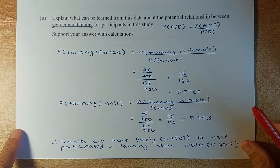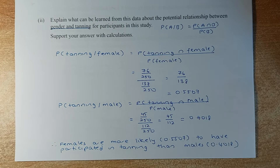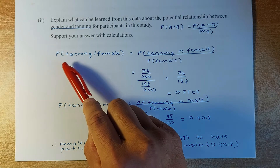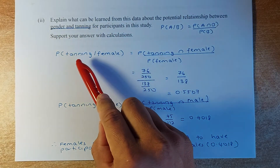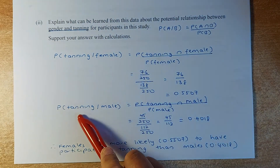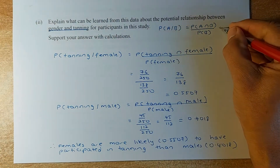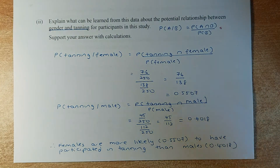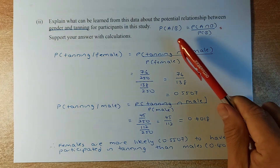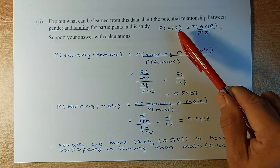Now we look at the next part: explain what can be learned from this data about the potential relationship between gender and tanning. We are looking at tanning given female, and tanning given male — this is conditional probability. This formula is given in the booklet. Remember that because every merit or excellence question always involves conditional probability. Probability of A given B is always P(A and B) divided by P(B).